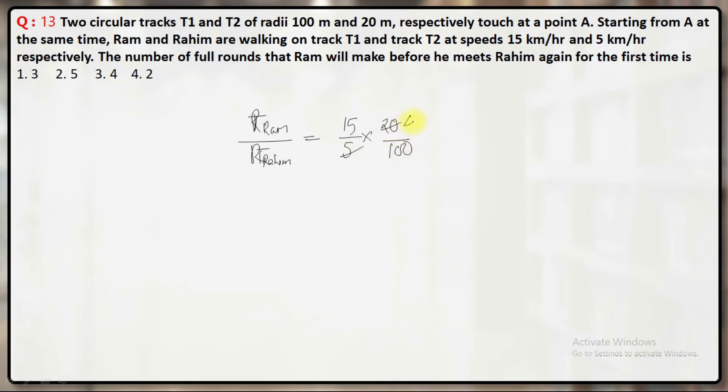This will cancel it out four times. We'll get 60 by 100. 60 by 100 means what? 3 by 5.